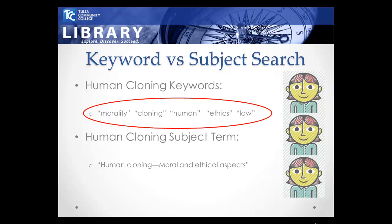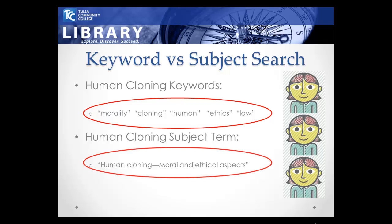However, a subject search on the same topic would look different. You would find, through using the library catalog, that there is a subject term for this topic: "Human cloning, moral and ethical aspects." This one very specific phrase applies to all books that cover the moral and ethical aspects of human cloning. By looking at books and other items under this subject term, you will find items that are a close match for your research topic.